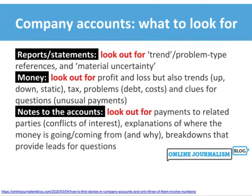Company accounts can be broadly divided into three different sections. At the front of the accounts you will find reports and statements from the directors, the accountants and other people involved in the company's operation. In the middle you will find the money — the balance sheet, profit, loss, tax and other problems. And then towards the back you will have the notes to the accounts, which has extra detail on things like payments to related parties and more detail on where the money is going or coming from.